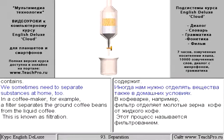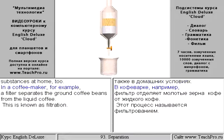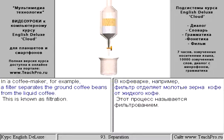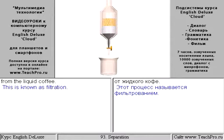We sometimes need to separate substances at home, too. In a coffee maker, for example, a filter separates the ground coffee beans from the liquid coffee. This is known as filtration.